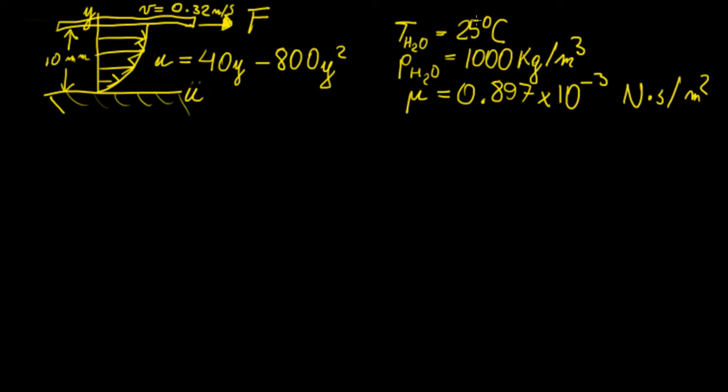Basically we have water at 25 degrees Celsius, so that's just room temperature, and the density of water at this temperature is 1,000 kilograms per meter cubed. If we look up tables of values for water at standard conditions, the viscosity is going to be equal to this value right here.